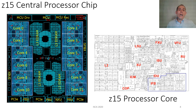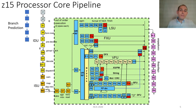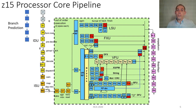Each core operates continuously at 5.2 GHz. With such a fast clock speed, the core has a very deep pipeline. The Z15 core is superscalar, out of order, and supports simultaneous multi-threading. Fetching, decode, dispatch, and completion (or put-away) is in order, whereas instruction issuance to the 10 execution units is out of order. Up to six instructions can be dispatched and completed per cycle.